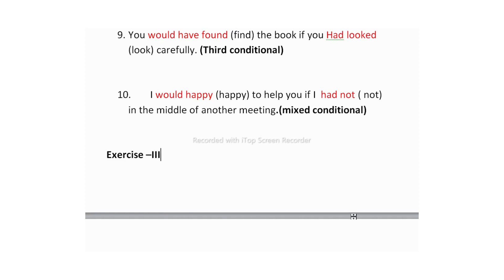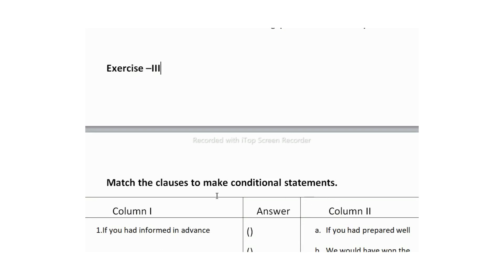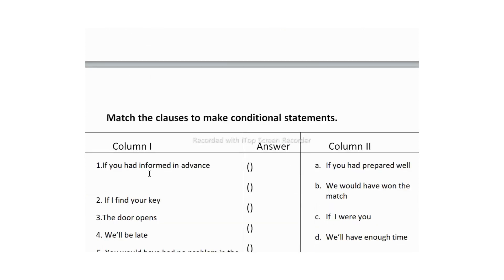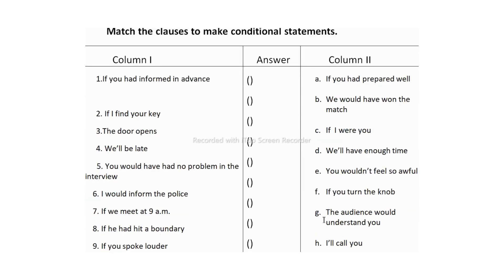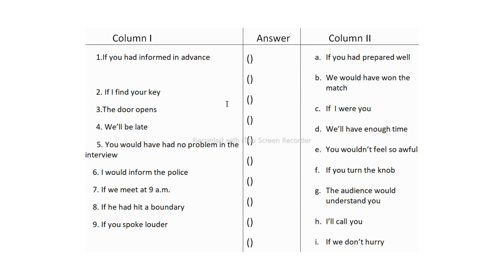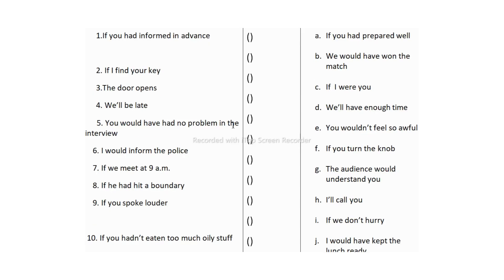Now let's move to the last exercise, Exercise 3. Here you have to match the clauses from Column A with Column B to make conditional statements. First, identify which conditional type the clause belongs to by looking at its structure, then find the matching clause.